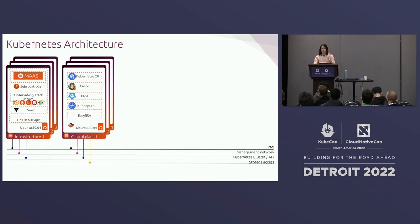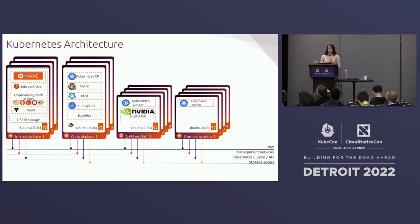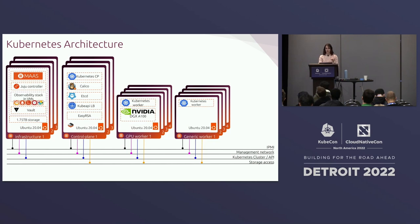For the actual Kubernetes deployment, we decided to do the control plane on three nodes with standard components. All of these components are operators or charms deployed with Juju. So Calico for networking, we have etcd, and kube-api load balancer. For the workers, we had two different sets: generic workers — Dell machines, standard and powerful — and then specific GPU nodes, which are NVIDIA DGX A100s. I'll go into more detail on how we integrate those to provide GPUs for pods in a few minutes.